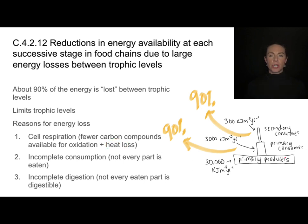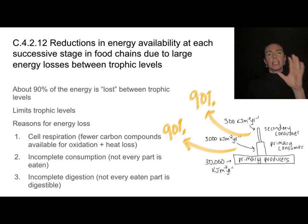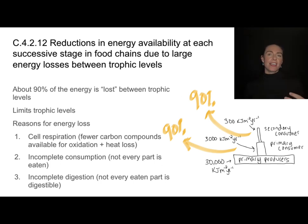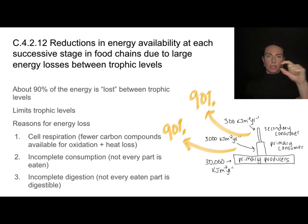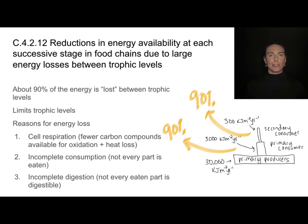There's also incomplete consumption. When I eat food, I don't always eat the whole organism — I don't eat the banana peel or the bone. So incomplete consumption results in an energy loss between two levels. The same goes for incomplete digestion. Even if I eat an entire organism, I might not have the enzymes to fully digest it. If I eat a hamburger with lettuce, I don't have the enzyme to digest that lettuce, so part of what I'm eating isn't being turned into biomass or usable energy.